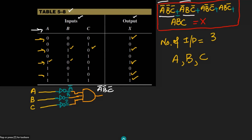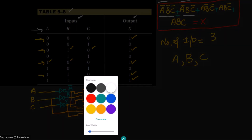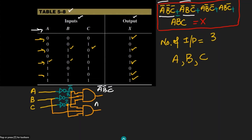The second term is A complement B C complement. So I use a second 3-input AND gate. A complement comes from the inverter output, C complement also comes from the inverter output, while B is taken directly as an uncomplemented input. The output of this AND gate is A complement B C complement.